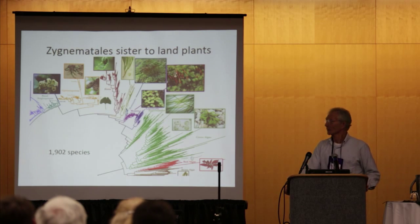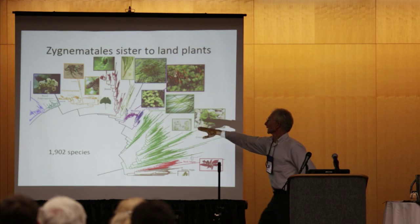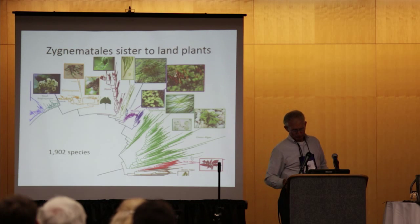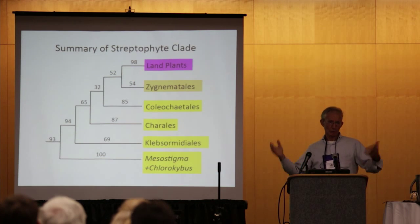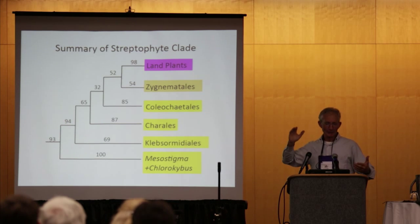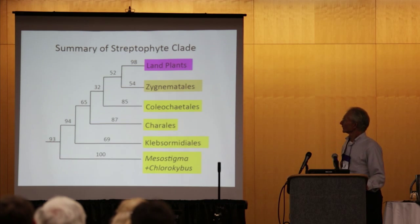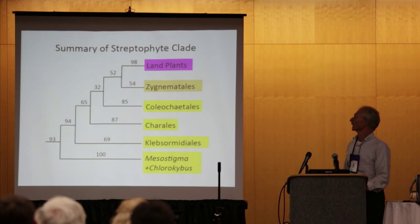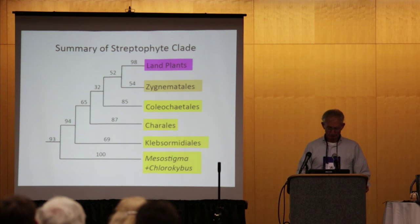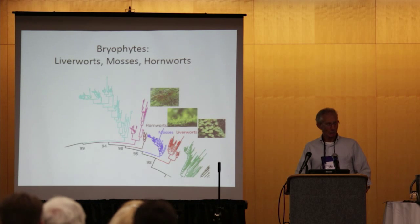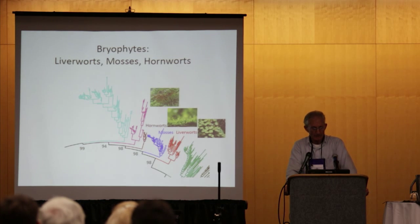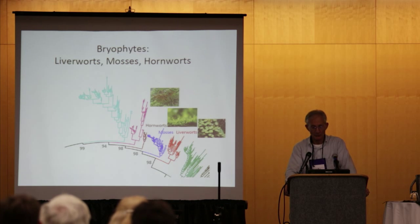We continue to see with the plastid genome that Zygnematales are sister to the land plants. Showing a close-up of the streptophyte clade with bootstrap values for the 1,900-species analysis — the support for that placement of Zygnematales is not all that high, but we continually retrieve it with the Plastigenom, followed by Coleochaetales and Charales. Moving into the land plants, in most of our plastid analyses we continue to recover liverworts, then mosses, then hornworts as successive sisters to the vascular plants — with high bootstrap support.